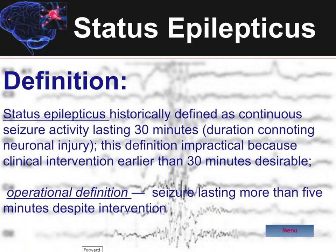Status epilepticus is another entity within the seizure world which is undergoing refinements in its definitions. Historically, the definition for status epilepticus was a continuous seizure lasting more than 30 minutes, since at that point in time there is likely to begin the development of actual cerebral damage. However, this is a very impractical definition because of the risk to the patient of waiting around on that 29th minute thinking that there was no neurological emergency since they weren't in status.